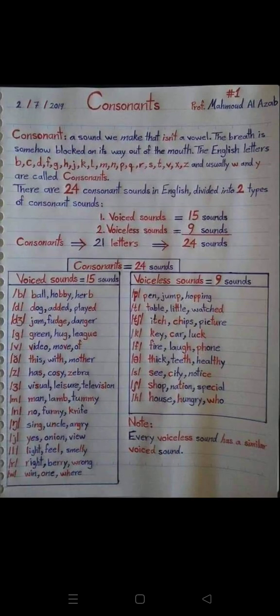Consonant sounds. A consonant is a sound we make that isn't a vowel — the breath is somehow blocked on its way out of the mouth. The English letters B, C, D, F, G, H, J, K, L, M, N, P, Q, R, S, T, V, W, X, Z, and usually Y and W are considered consonants.